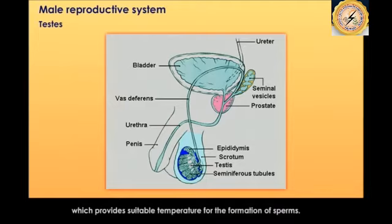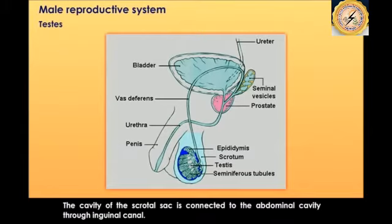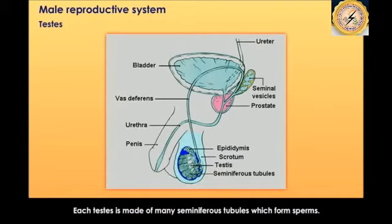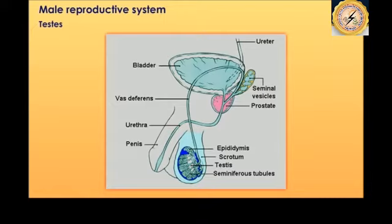This lower temperature provides a suitable environment for the formation of sperms, so the testes are present outside the body. The cavity of the scrotal sac is connected to the abdominal cavity through the inguinal canal. Each testis is made up of many seminiferous tubules which form the sperms.